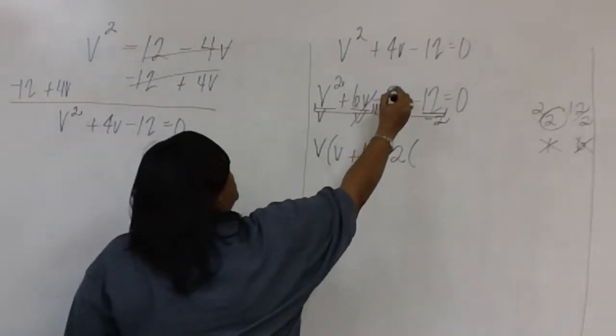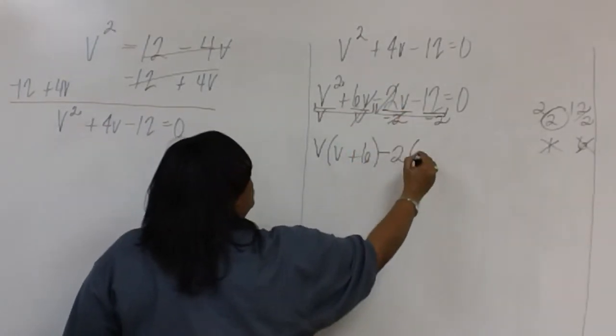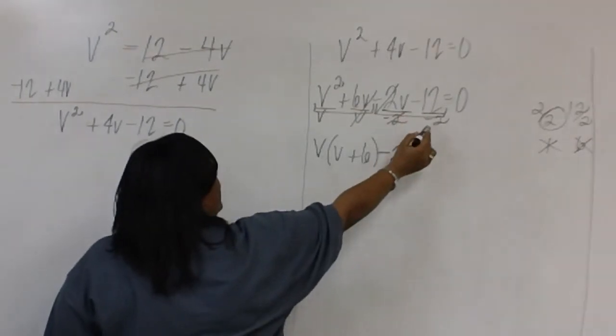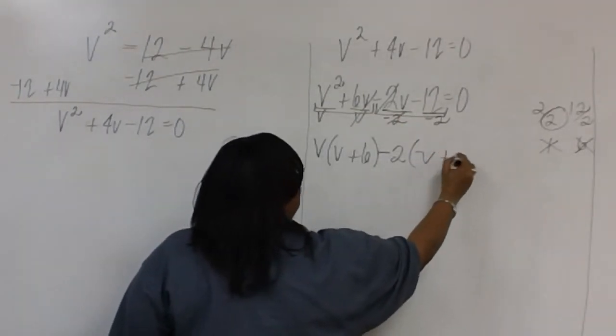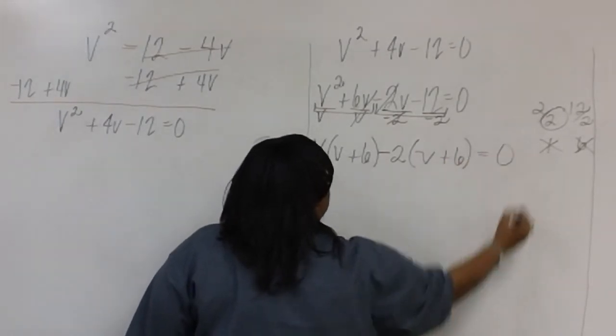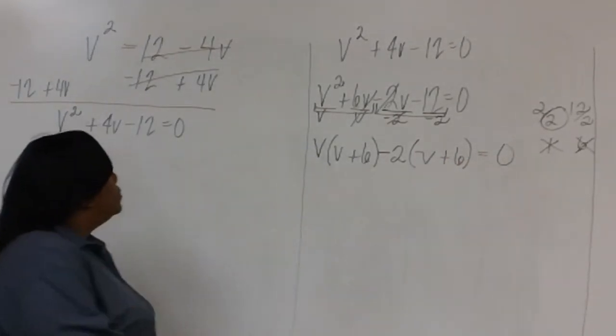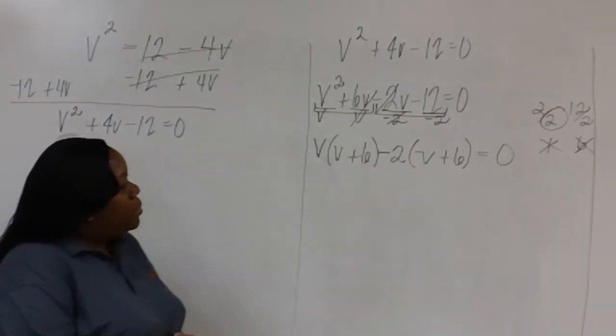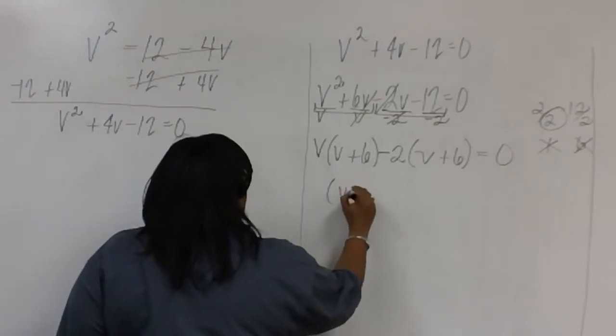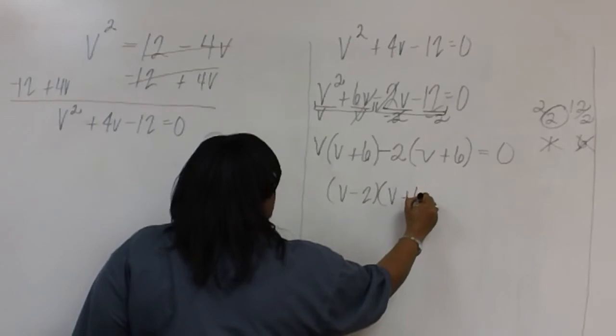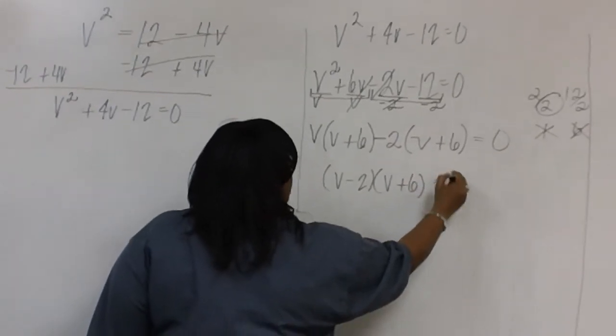Notice that the negative 2s cancel, and we're left with V. Negative 12 divided by negative 2 is a positive 6. Now that the factors are the same in each parentheses, we have V minus 2 times V plus 6 equals 0.